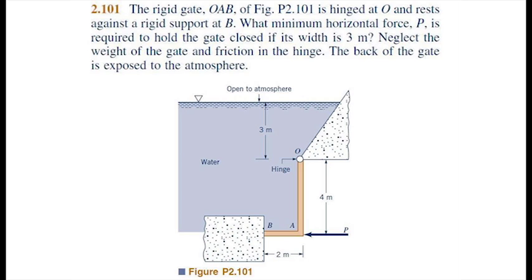The rigid gate OAB is hinged at O and rests against the rigid support at B. What minimum horizontal force P is required to hold the gate closed if its width is 3 meters? Neglect the weight of the gate and friction in the hinge. The back of the gate is exposed to the atmosphere.